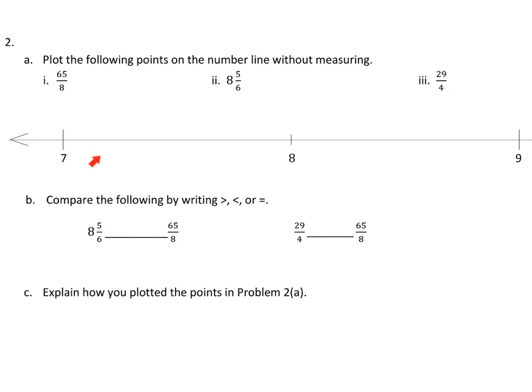It's pretty nice. We're back to number lines, but look at these directions. Plot the following points without measuring. They do not want you to get tick marks into eighths and sixths and fourths and find exactly where these numbers go. They want you to do this without measuring. So we have a number line given to us, 7 to 9. So we're assuming that these numbers fit somewhere in there.